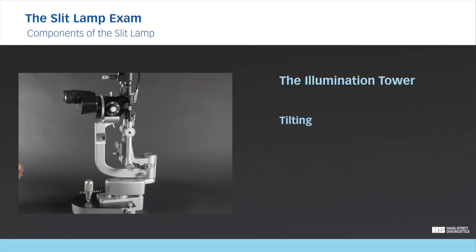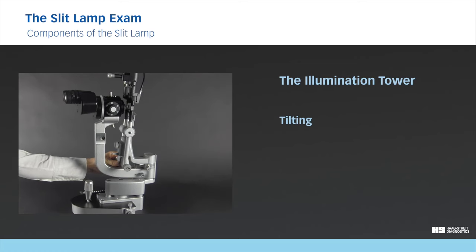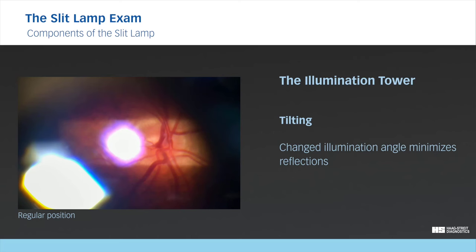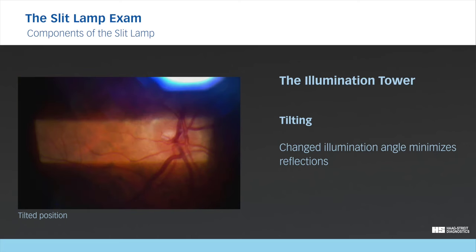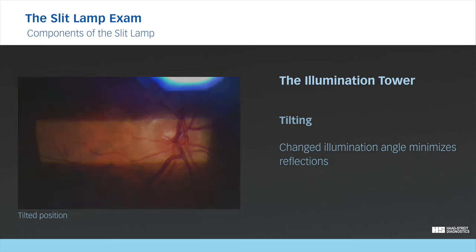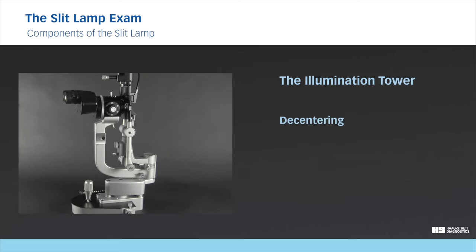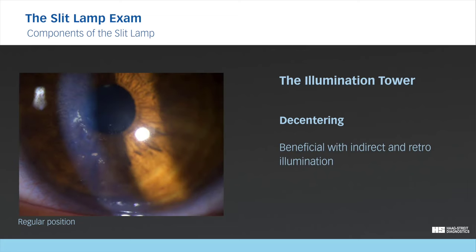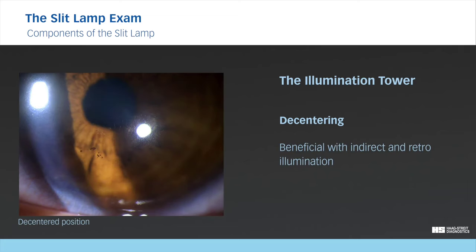Modern slit lamps feature an option which allows you to tilt the illumination tower and therefore change the angle in which the slit is projected on the eye. This can be used to minimize reflections from the preset lens when examining the retina. De-centering the illumination tower decouples the shared plane of focus of the illumination tower and the observation system, which can be beneficial for examinations with indirect illumination and retro illumination. Remember to restore centering after examining.